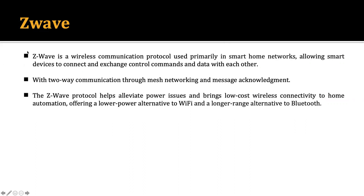For the smart home application, we generally use Z-Wave, allowing smart devices to connect and exchange control commands and data with each other through two-way communication, mesh network, and message acknowledgement. The Z-Wave protocol helps address power issues and brings low-cost wireless connectivity to home automation, offering a low-power alternative to Wi-Fi and a larger-range alternative to Bluetooth.